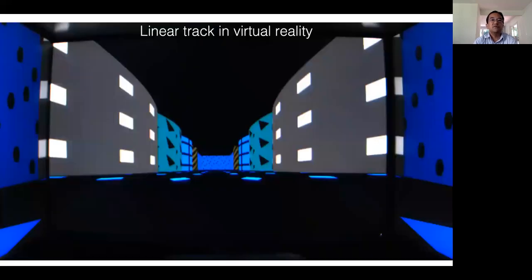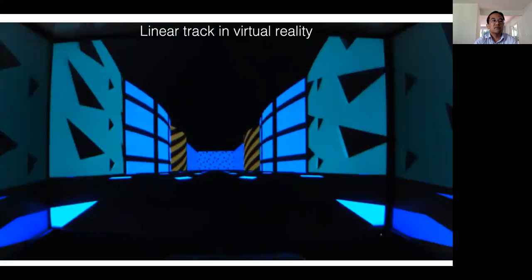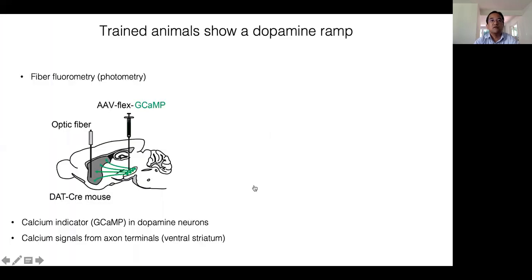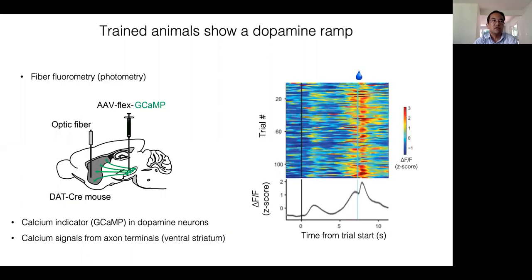To conduct these tests, we use virtual reality with head-fixed mice. Mice were presented with the same passively and received reward at the final location. We first measured the activity of dopamine neurons using fiber fluorometry or photometry. A calcium indicator GCaMP6 was expressed in dopamine neurons and axonal calcium signals were monitored through an optical fiber inserted in the ventral striatum.